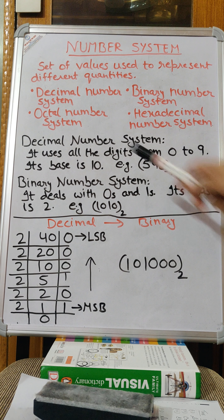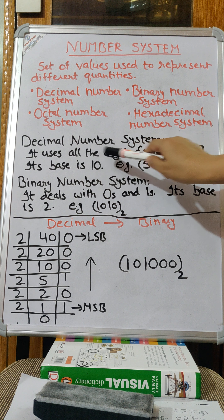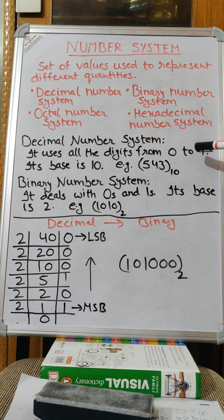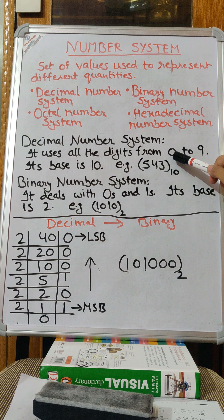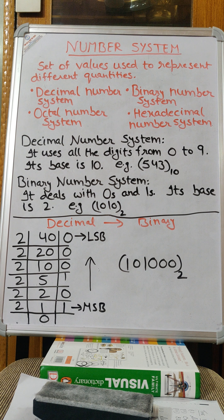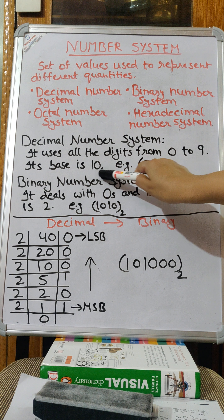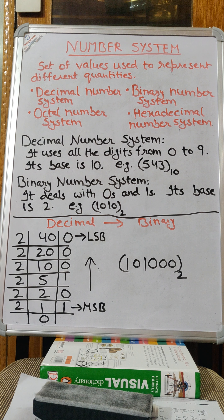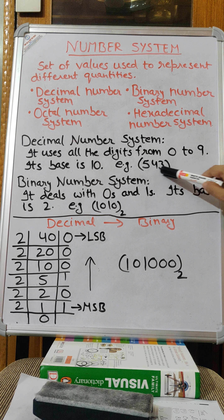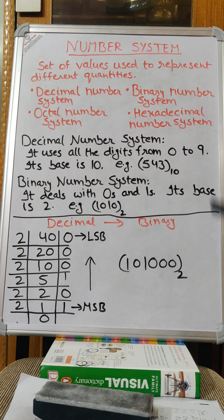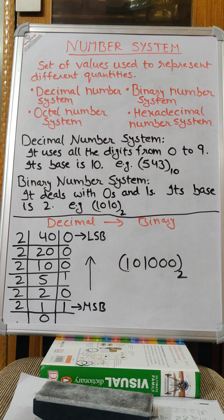In decimal number system, it uses all the digits from 0 to 9. So how many digits are there in total? 10 digits, that is 0 to 9, and its base is 10. For example, how will you represent a decimal number? Any number in brackets with 10 as the base. So this is how you represent the decimal number system.